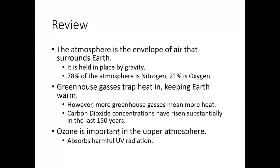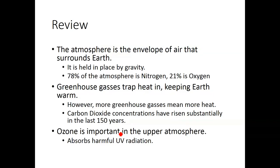In the next lecture, I'm going to talk about the layers of the atmosphere. But here's a quick review of what we covered: the atmosphere is the envelope of air that surrounds Earth; gravity holds it in place; the most abundant gas is nitrogen, followed by oxygen; greenhouse gases are a good thing in that they trap heat and keep us warm, but too much is happening now, causing runaway warming. And ozone is important in our upper atmosphere. We'll talk specifically about the stratosphere in the next lecture — thank you for watching.